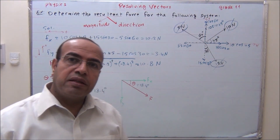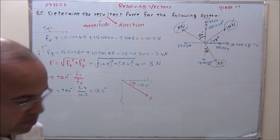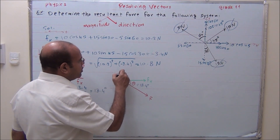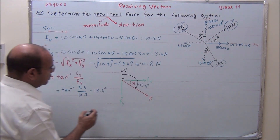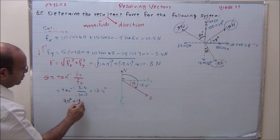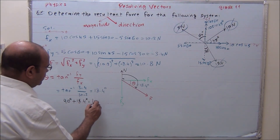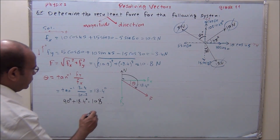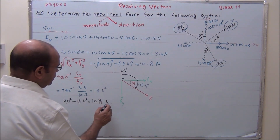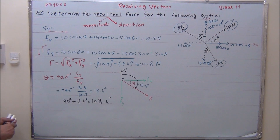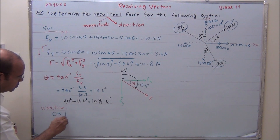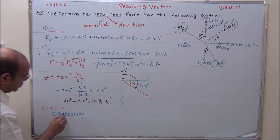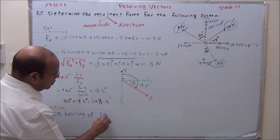It is better to write the angle in bearing. Bearing is the angle clockwise from the north. So this is the north and this is the bearing direction. We add 90, so we write 90 plus 18.4. The answer is 108.4 degrees.